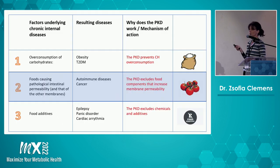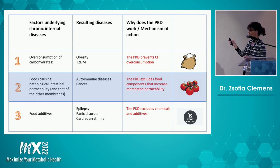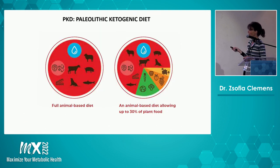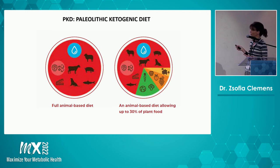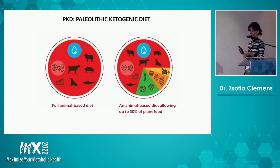In this presentation I will be focusing on the middle factor — foods that are causing a pathological permeability of the intestines — and the resulting autoimmune diseases and cancer, specifically the autoimmune diseases. We are using a diet we call the PKD, the Paleo-Ketogenic Diet. This is basically a meat-fat-based diet based on four-legged animals, with a specific ratio between meat and fat, and it also includes organ meats.